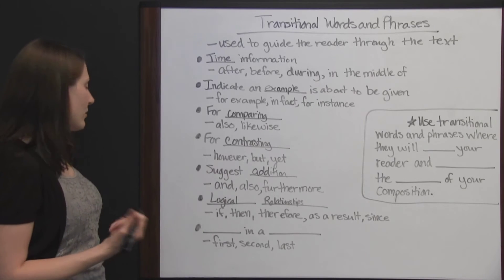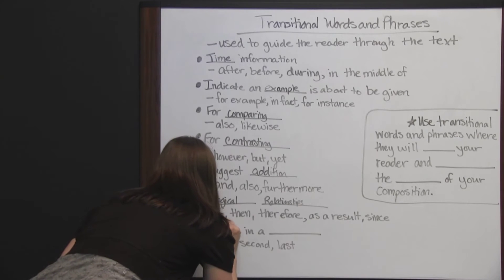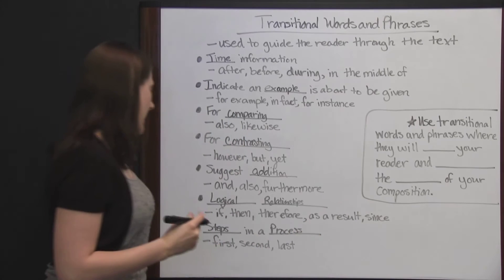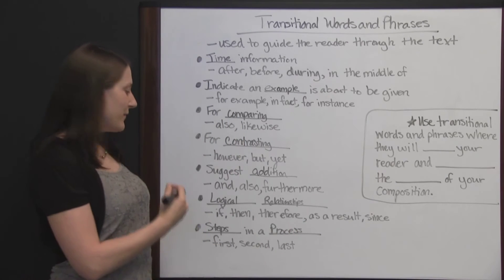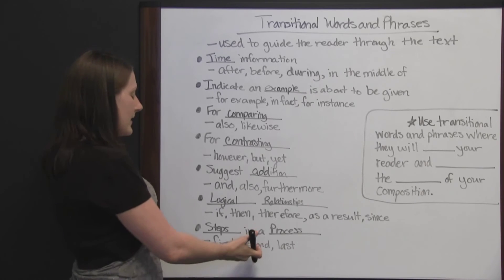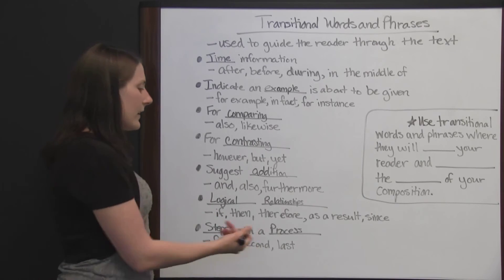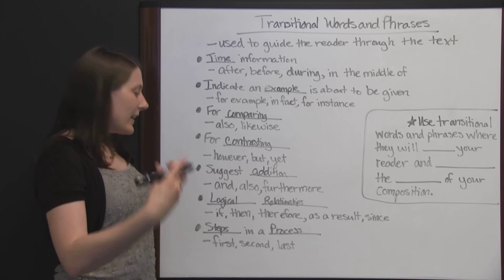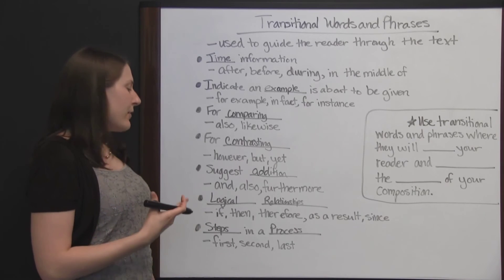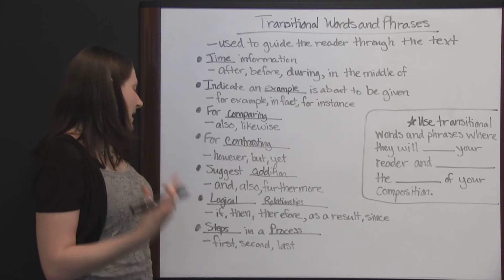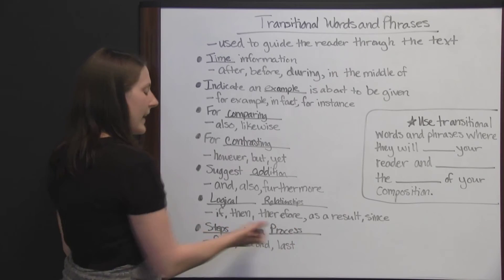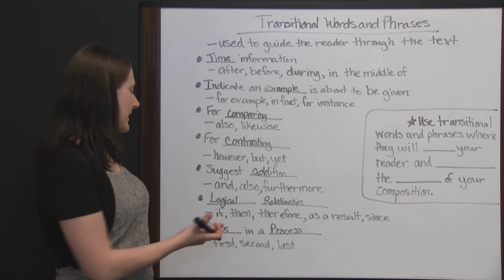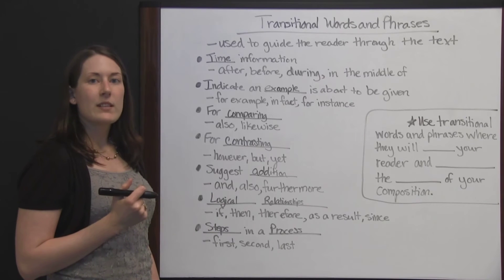Our last example for transitional words and phrases covers steps in a process. These words show the sequence of steps. For example: 'First, you'll gather up all your ingredients. Second, you'll mix the dry ingredients in a bowl. Last, you'll take the cake out of the oven.' These transitions tell you exactly what's happening — first, second, third. They may also use 'next' or 'after that.' The word 'last' isn't telling you the tenth step; it just uses a transitional word to give you an idea of where you are in the process.